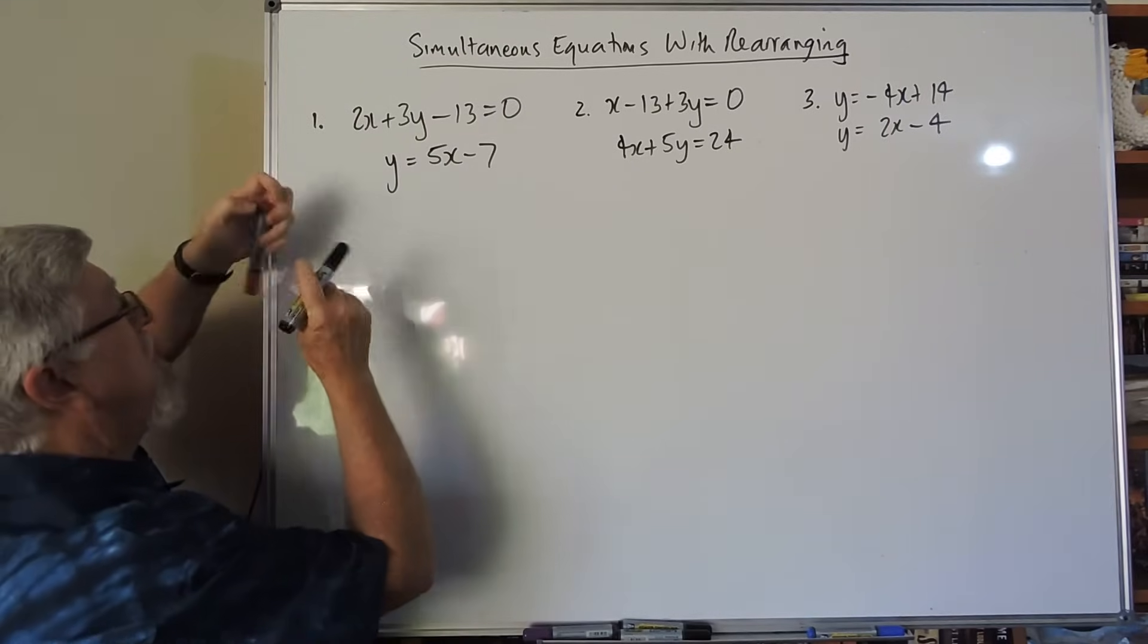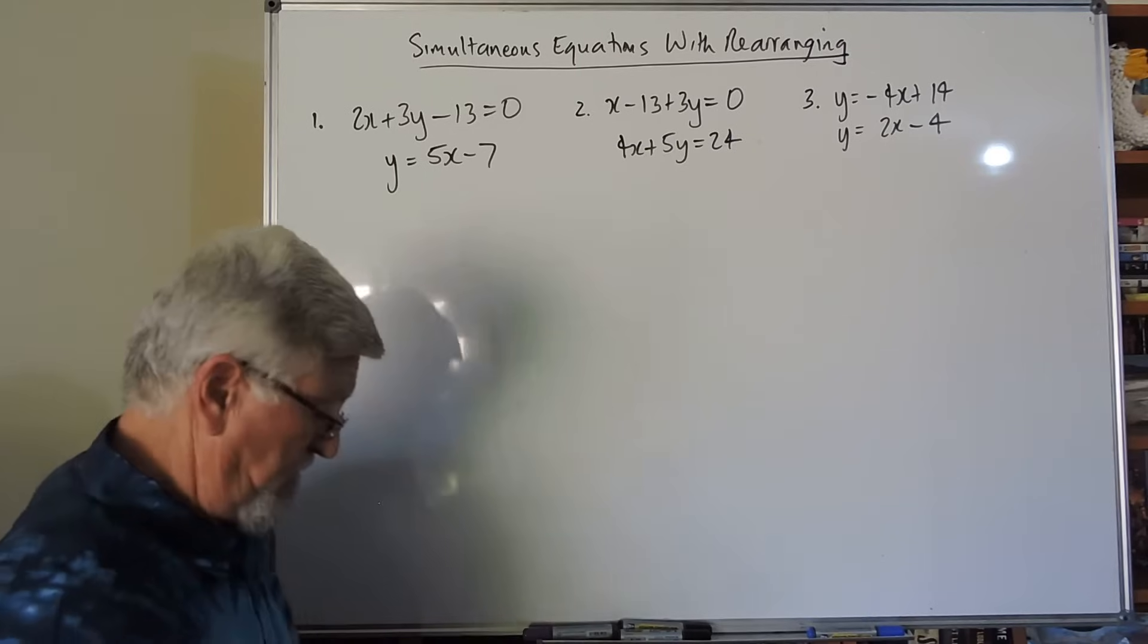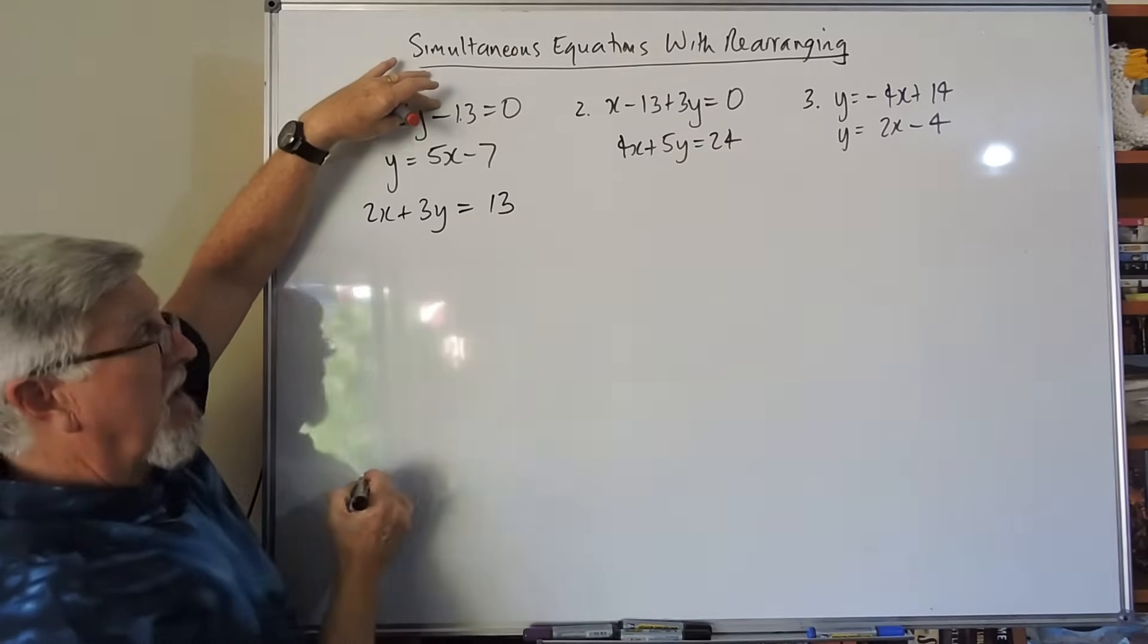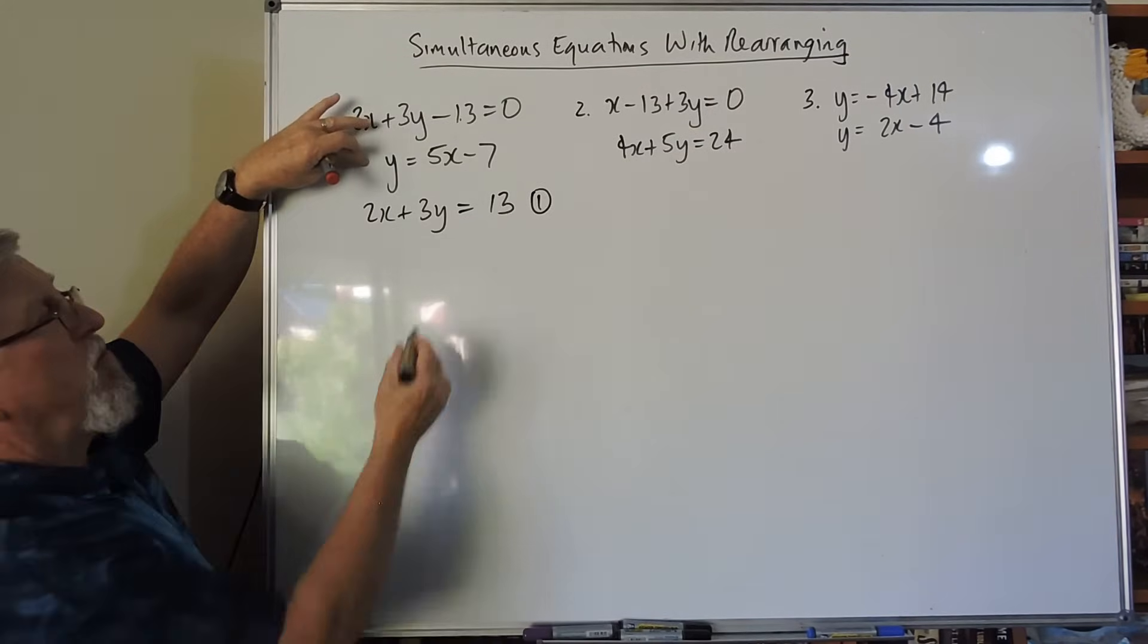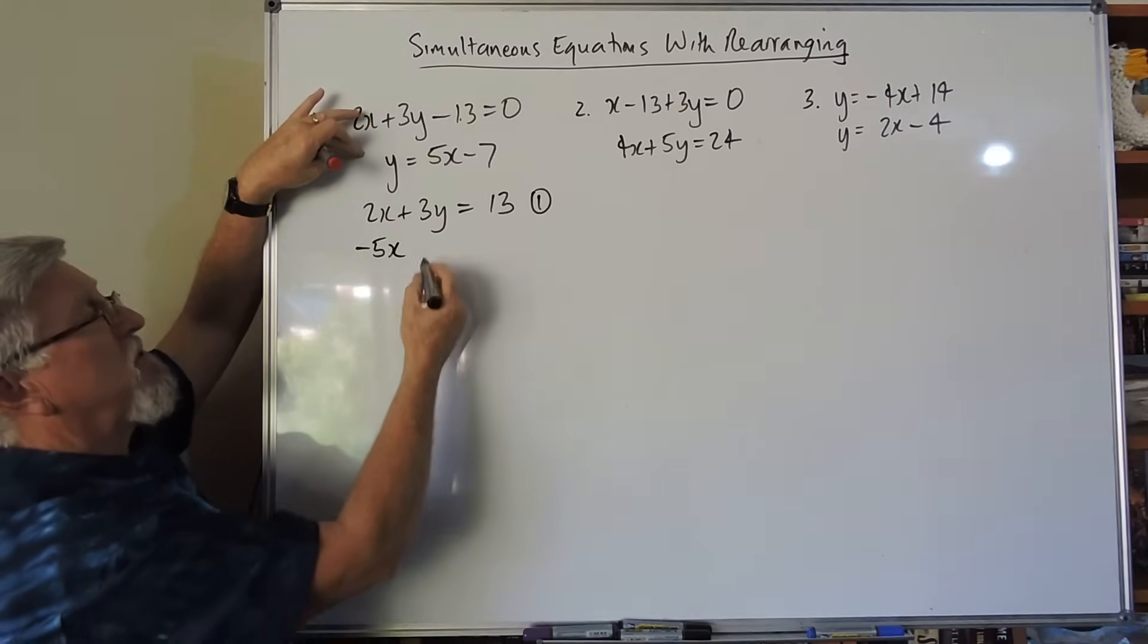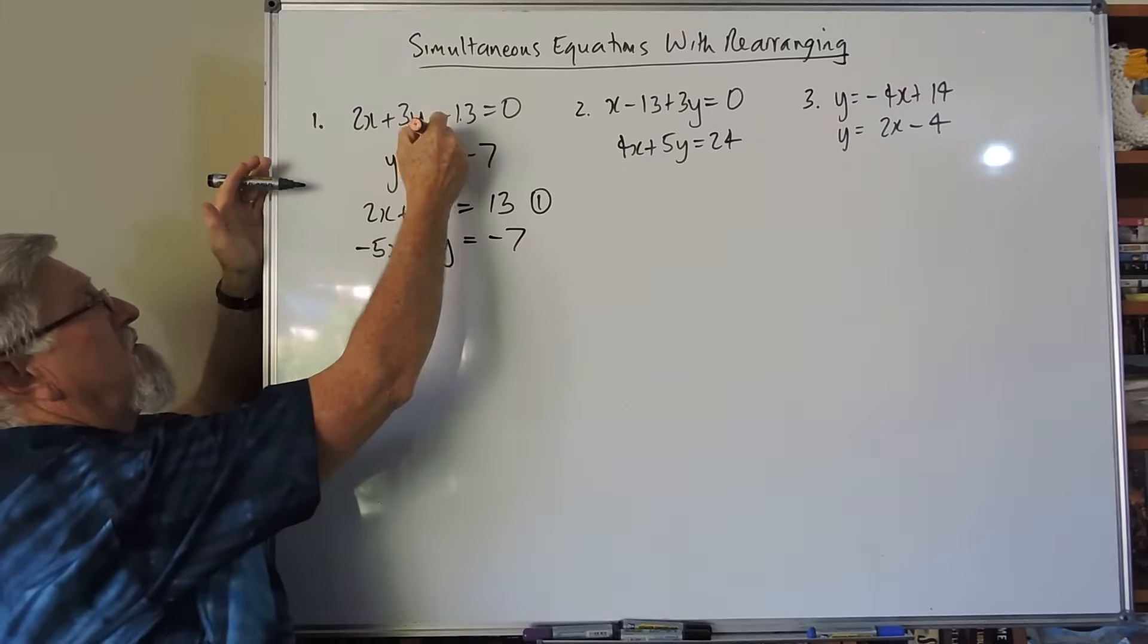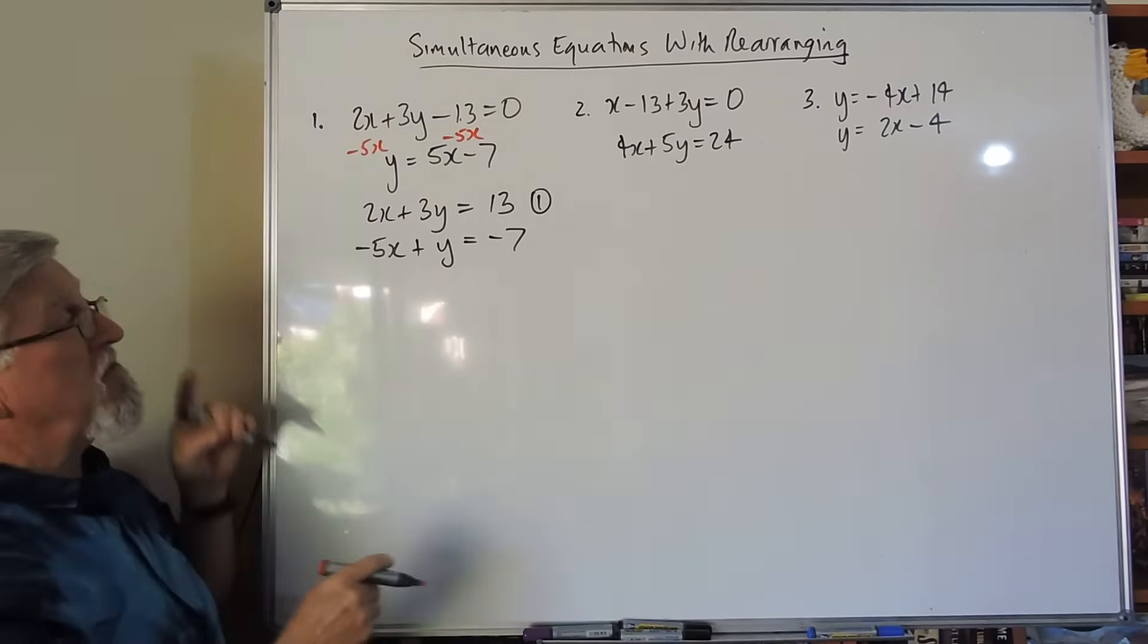I tend to prefer, because of the way I've done the previous videos, let's go to 2x plus the 3y, move the minus 13 to the other side, and that becomes our equation one. This one here, I could go minus 5x, move it to the other side, it becomes minus 5x plus y equals minus 7. So the only thing that's moved there is the 5x has gone to the other side.